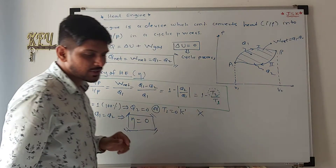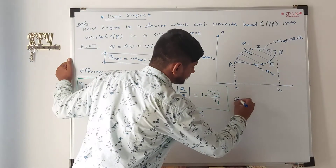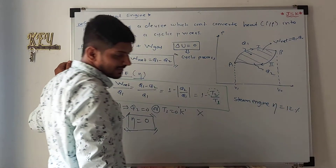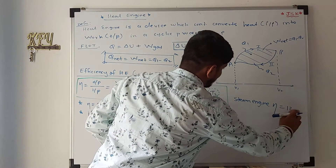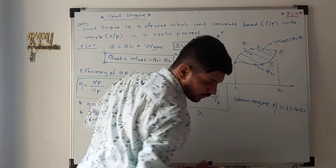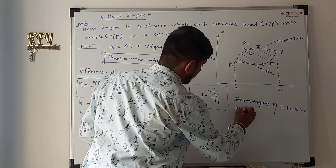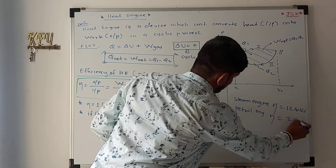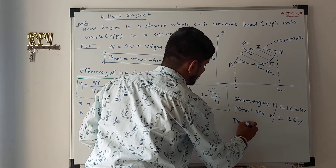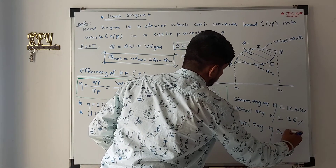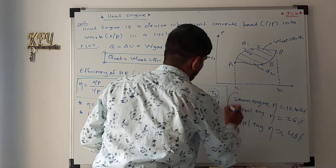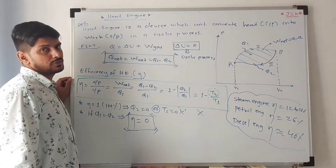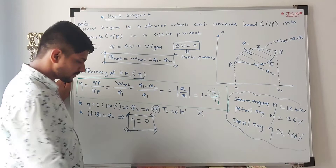There are certain facts: in case of a steam engine, efficiency is very less — up to 12 to 16%. In case of a petrol engine, efficiency is up to 26%. In case of a diesel engine, efficiency is up to 40%. So generally, practically we get efficiency up to 55% — beyond that we don't get.